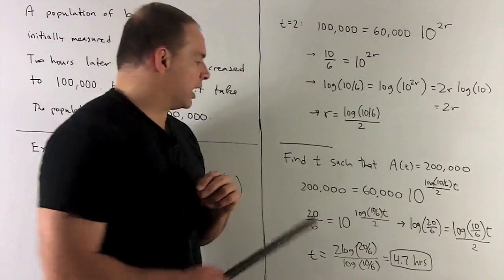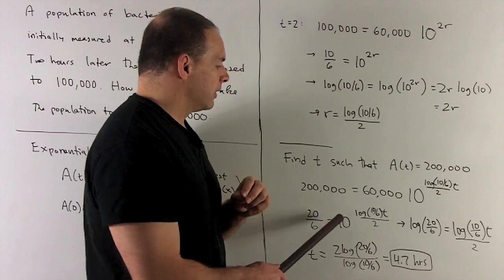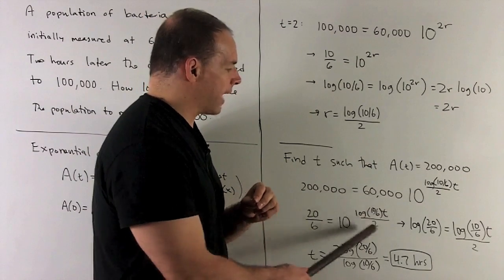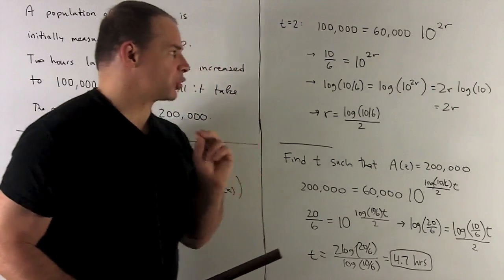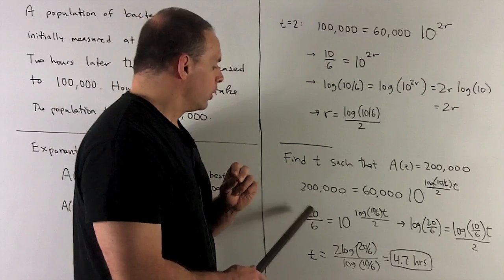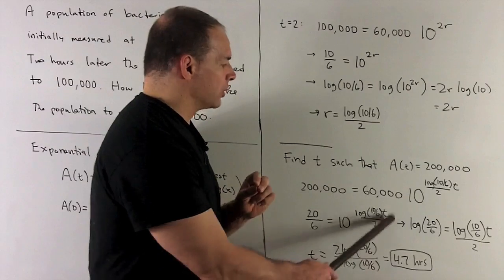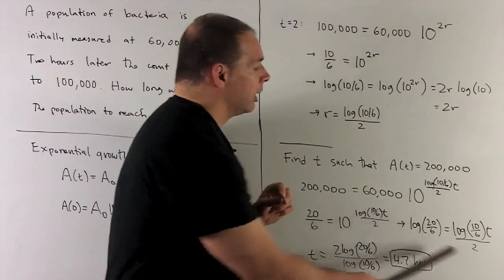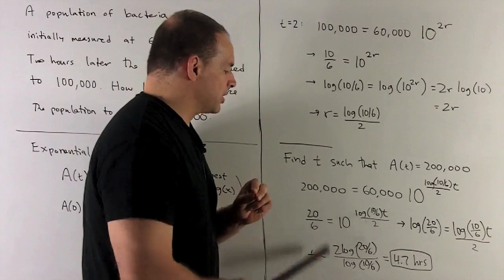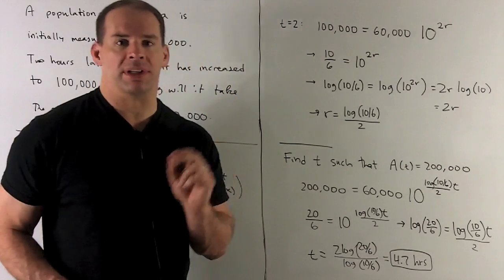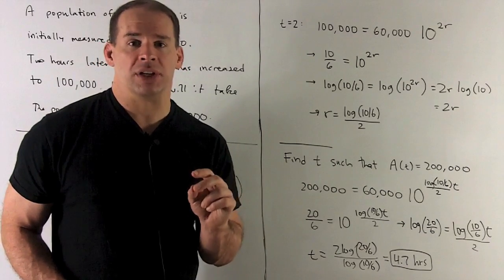Again, we isolate. I put the 60,000 on the other side, that'll give me 20 over 6. Then I'll have my 10 raised to our factor for r times t. Then I want to apply log to both sides and go through our same trick. We'll have a log 20 over 6. The log and the 10 are going to cancel, and I'll just be left with what's up on top. Now I can just isolate the t. When I do that, push these numbers into my calculator, I'm going to get 4.7 hours. So 4.7 hours, we'll have 200,000 in our population.